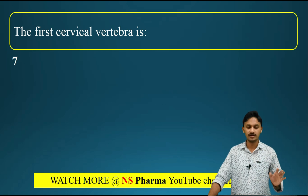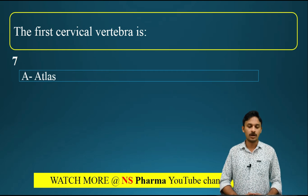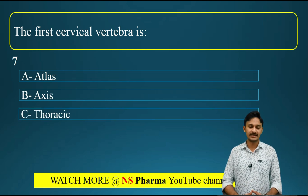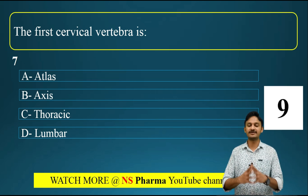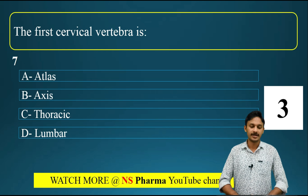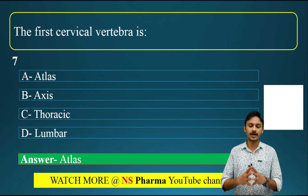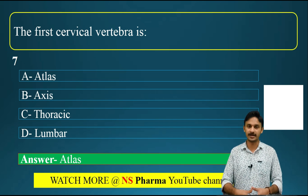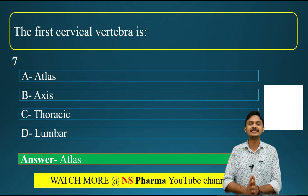Question number seven: the first cervical vertebra is called? Options are: option A - Atlas, option B - Axis, option C - thoracic, option D - lumbar. The correct answer is option A - Atlas. The first cervical vertebra is known as Atlas. The second cervical vertebra is called Axis - C1 is Atlas, C2 is Axis.